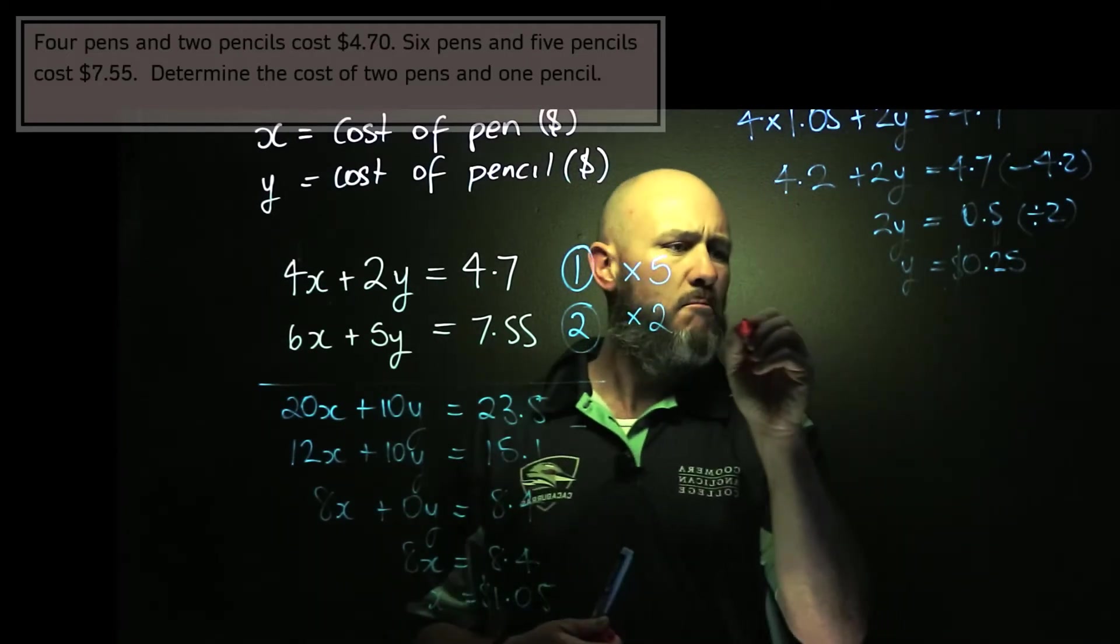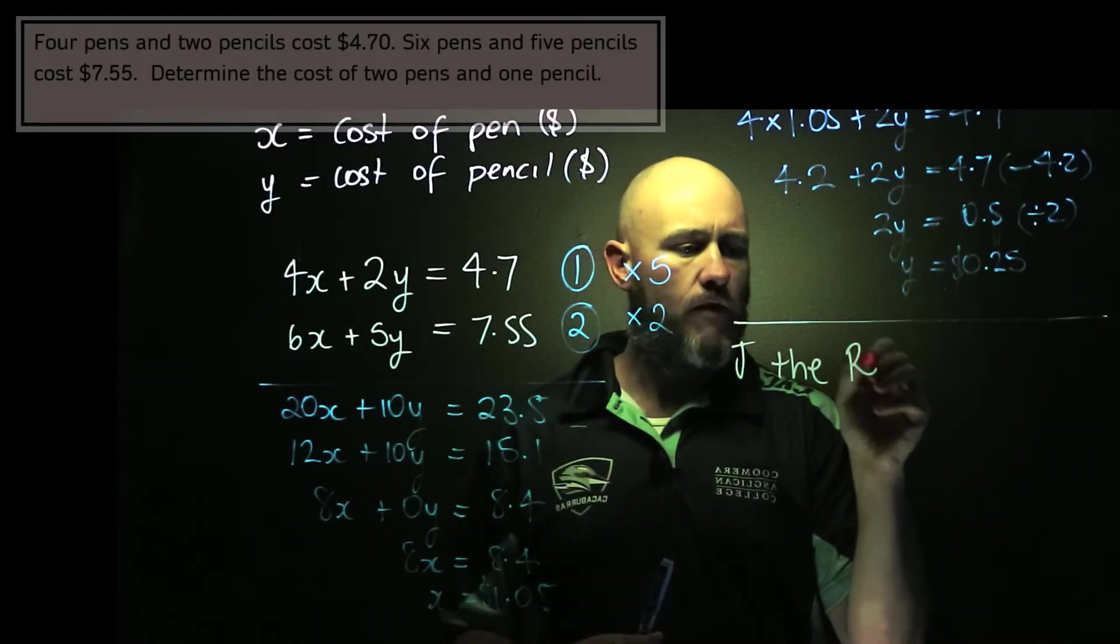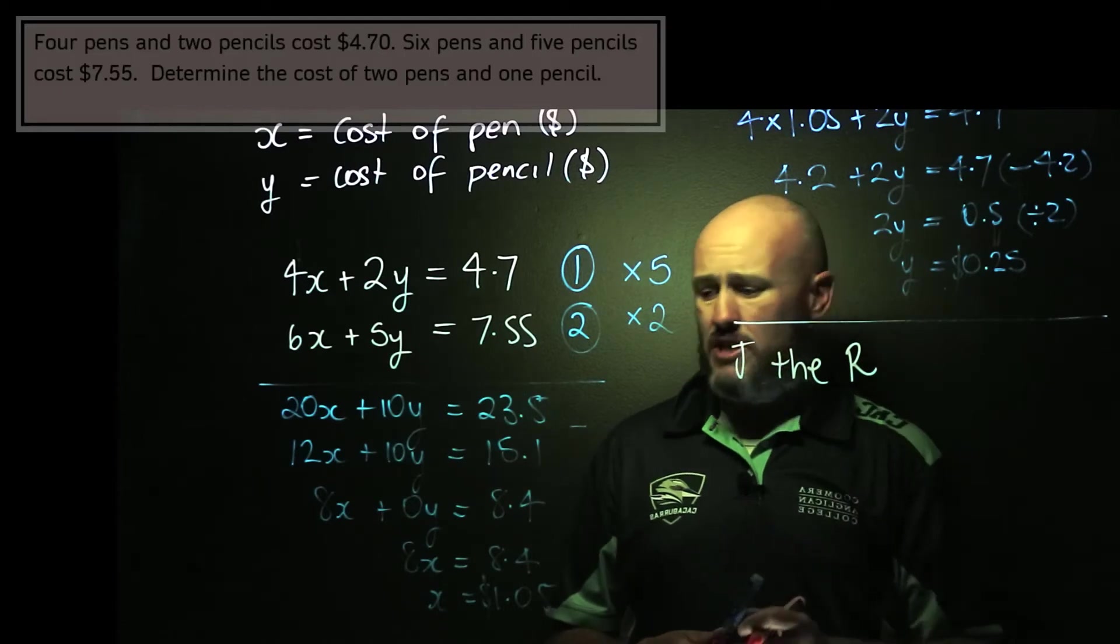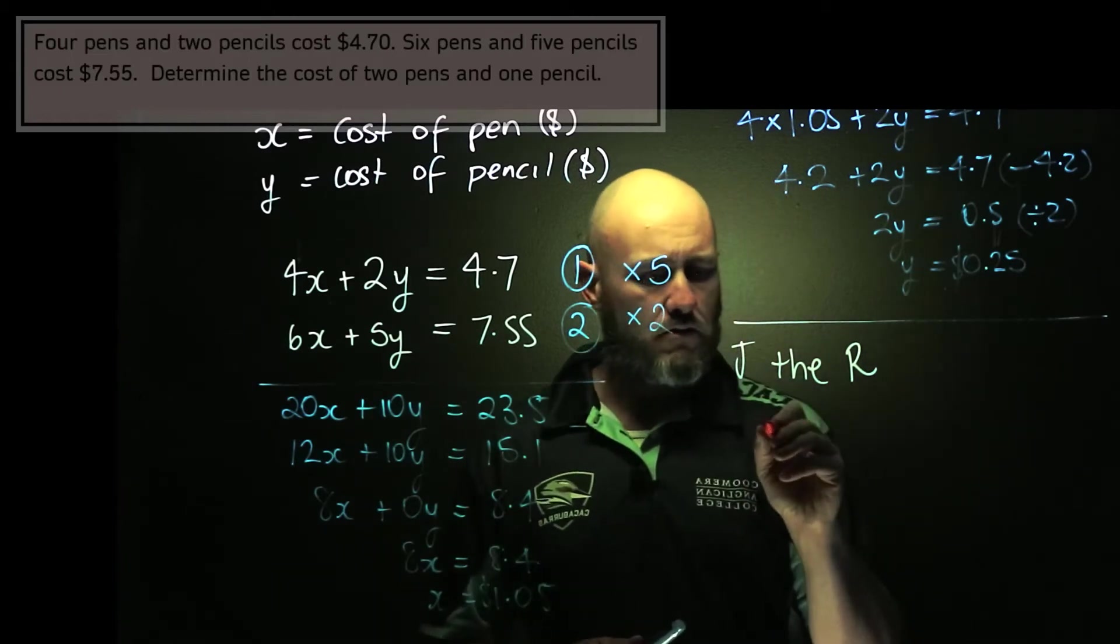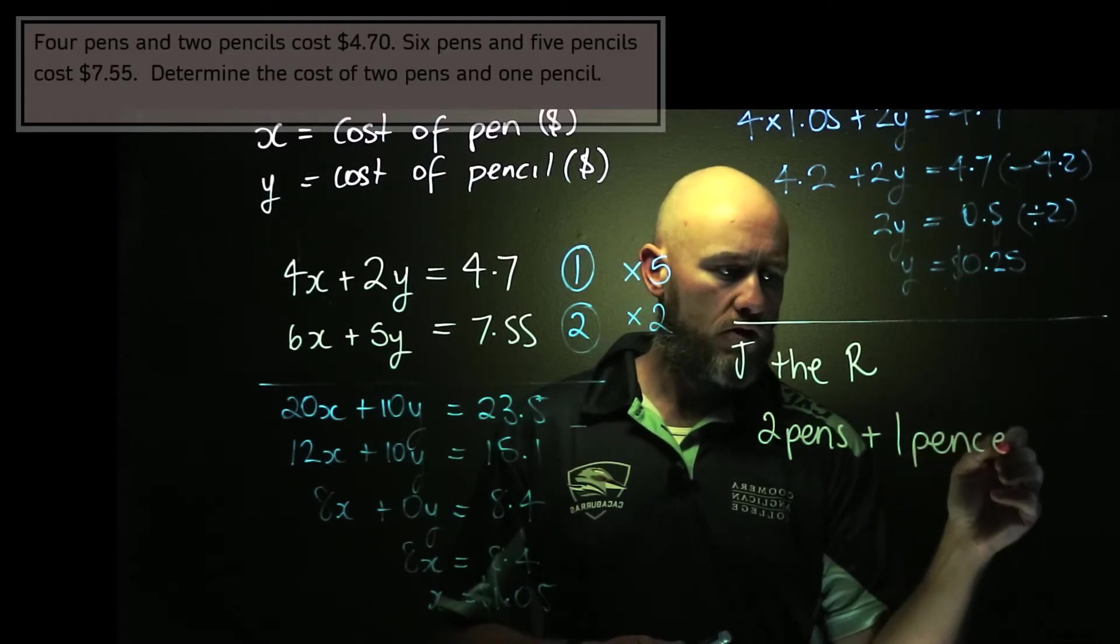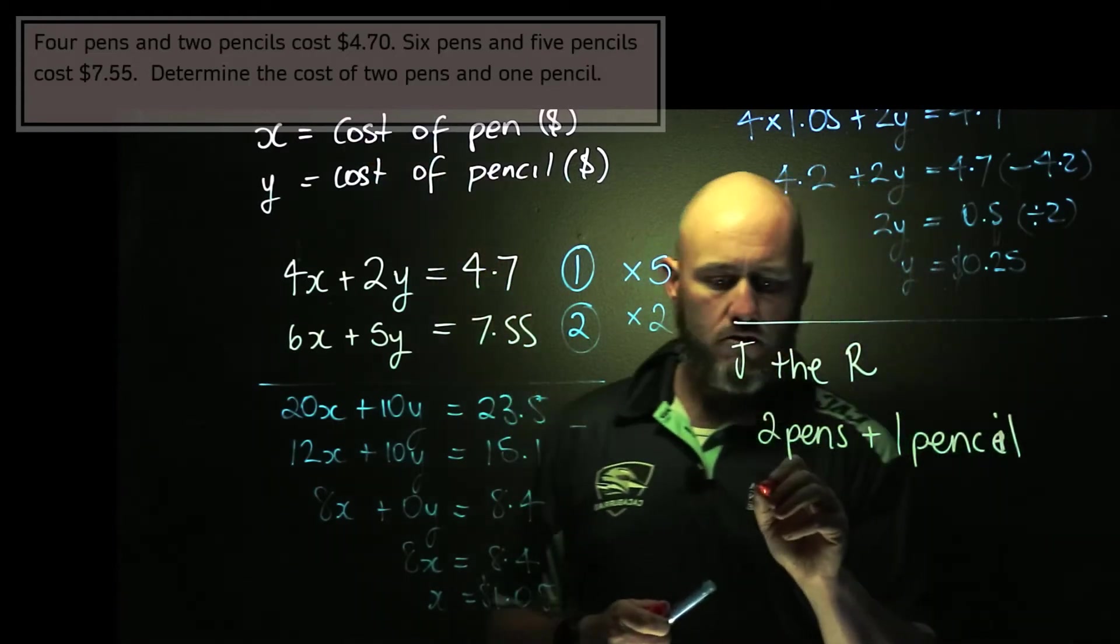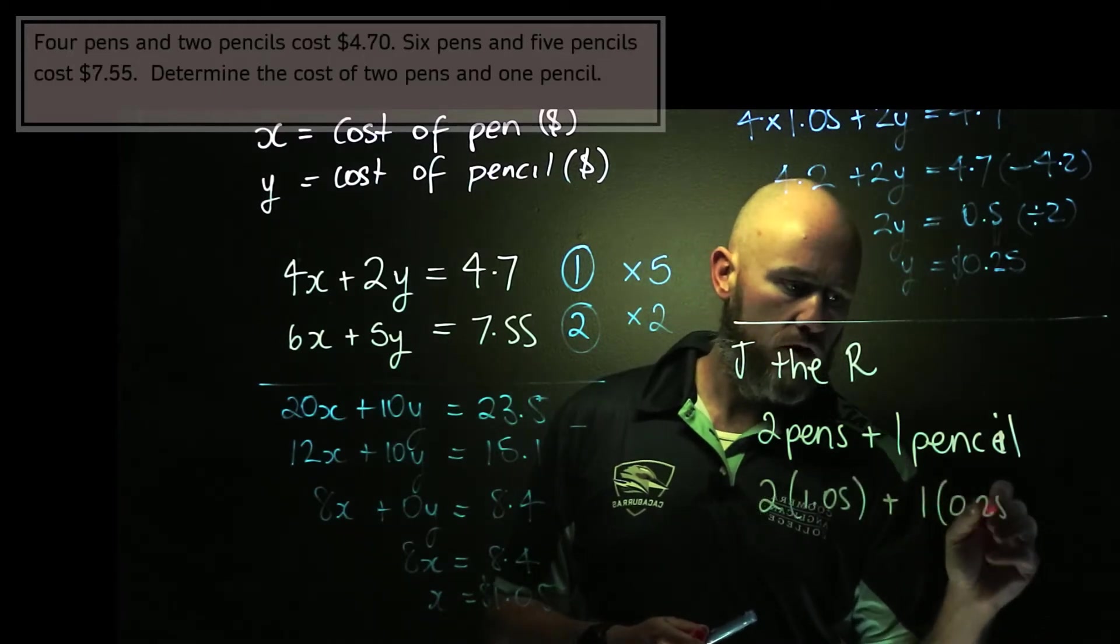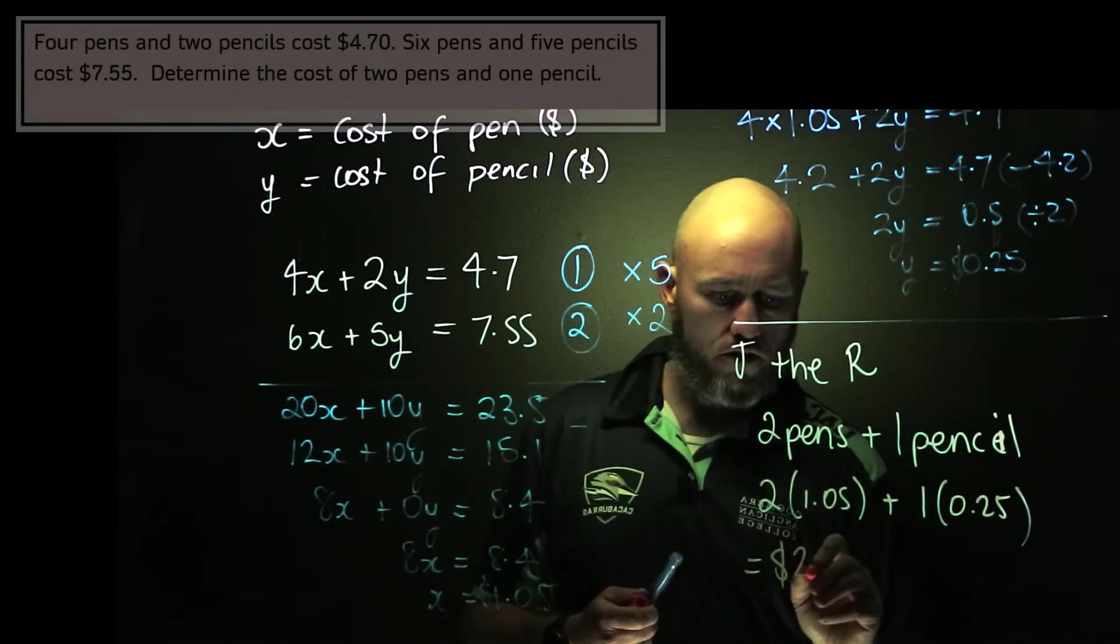And so I'm going to finish the problem now. I might need to do the old justify the reasonableness or evaluate the reasonableness, but in this case I'll leave that out because I know you know how to do that. Instead, I need to just go back into context and finish the question, because the question clearly asked for the cost of 2 pens and 1 pencil. So 2 pens plus 1 pencil. Well, the cost of a pen is x, the cost of a pencil is y. So it's 2 times x, 1.05 plus 1 times pencil, which is 0.25, and that's equal to $2.35.